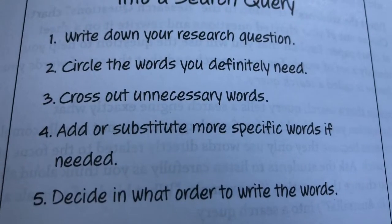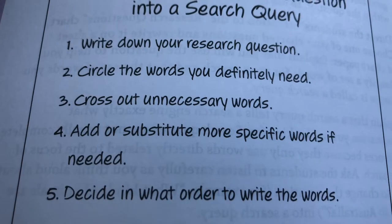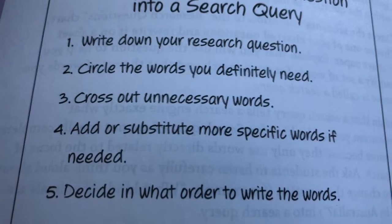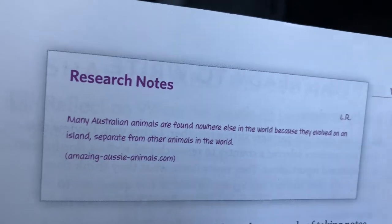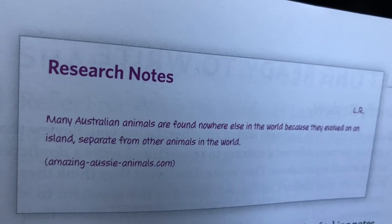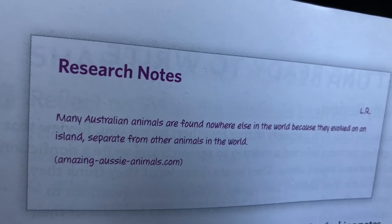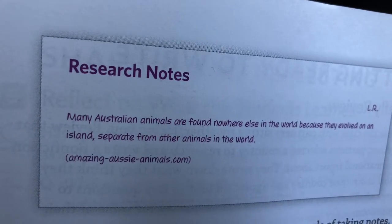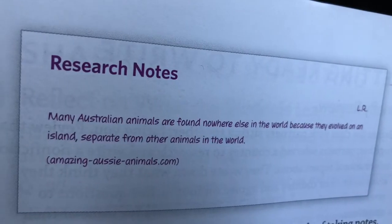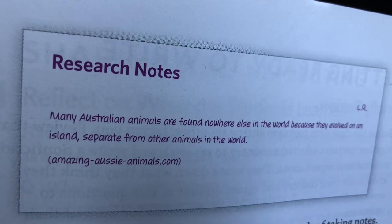The fifth item says decide in what order you would write the words. This is just how to do a query — you come up with a question, figure out what words are most important, put them in your search, and search away. As you're doing your research, there are going to be times when you run into a fact that's fascinating to you. Make sure you write that down somewhere in your notes, maybe on the back of your country report. Here's one: many Australian animals are found nowhere else in the world because they evolved on an island separate from other animals in the world. And that comes from a website called amazingaussieanimals.com.